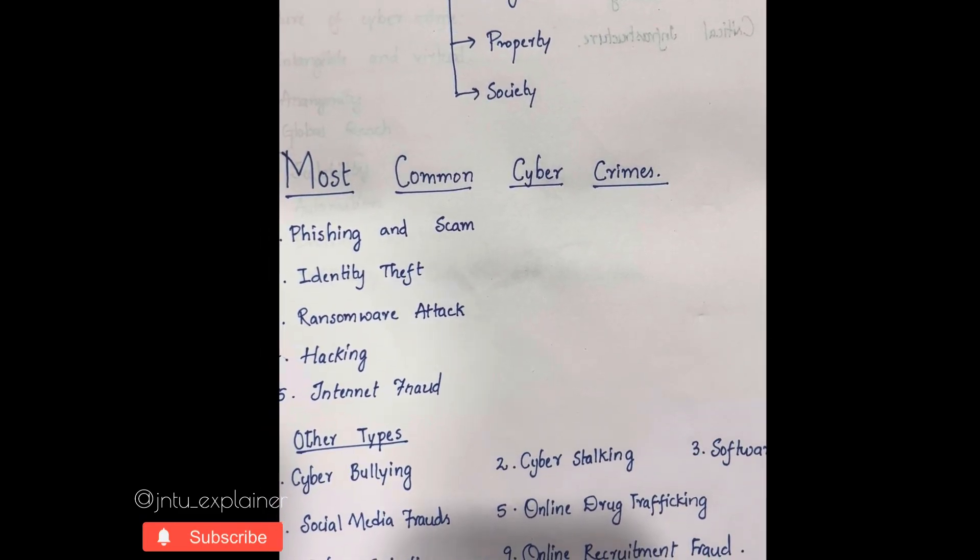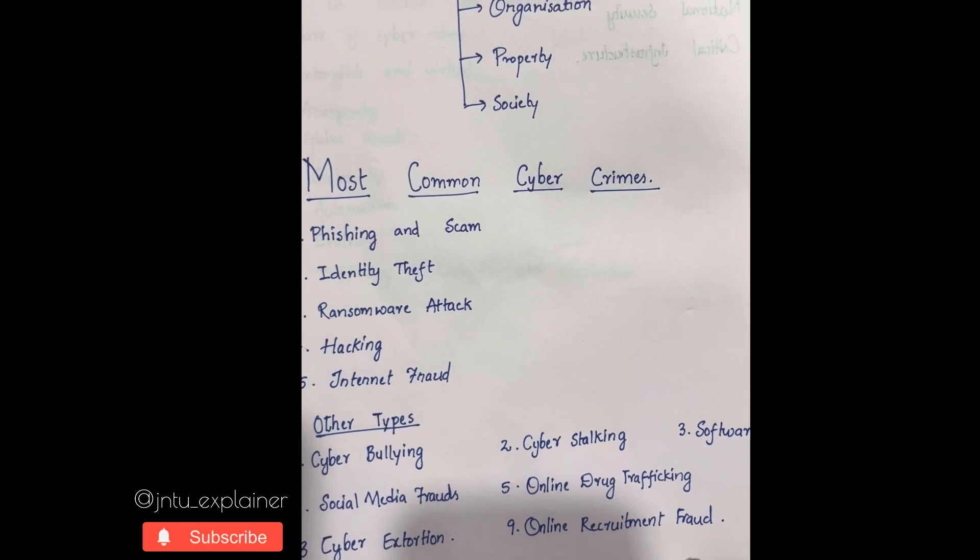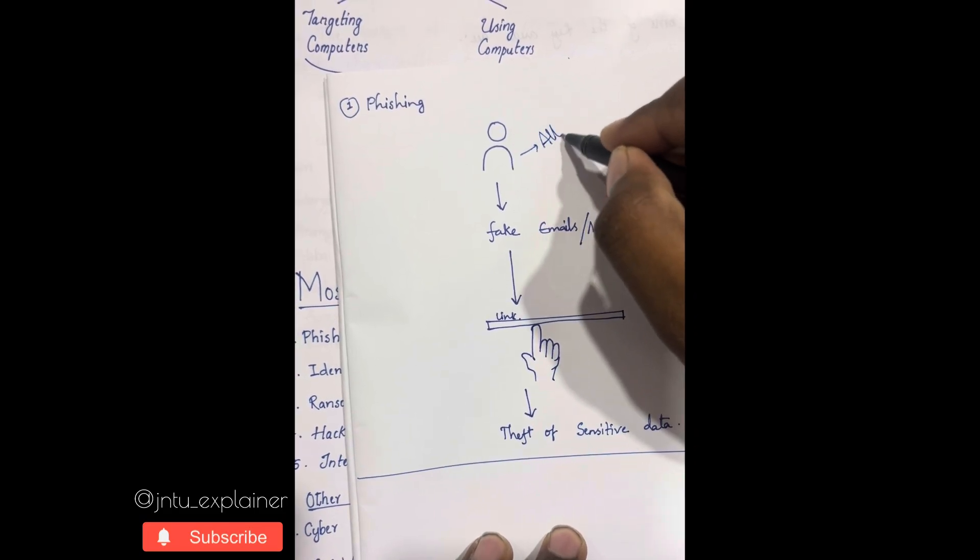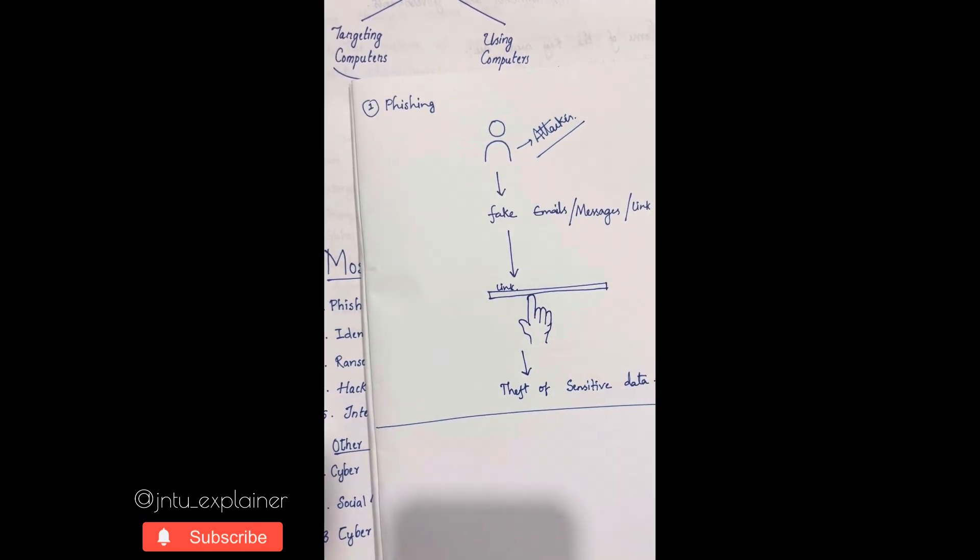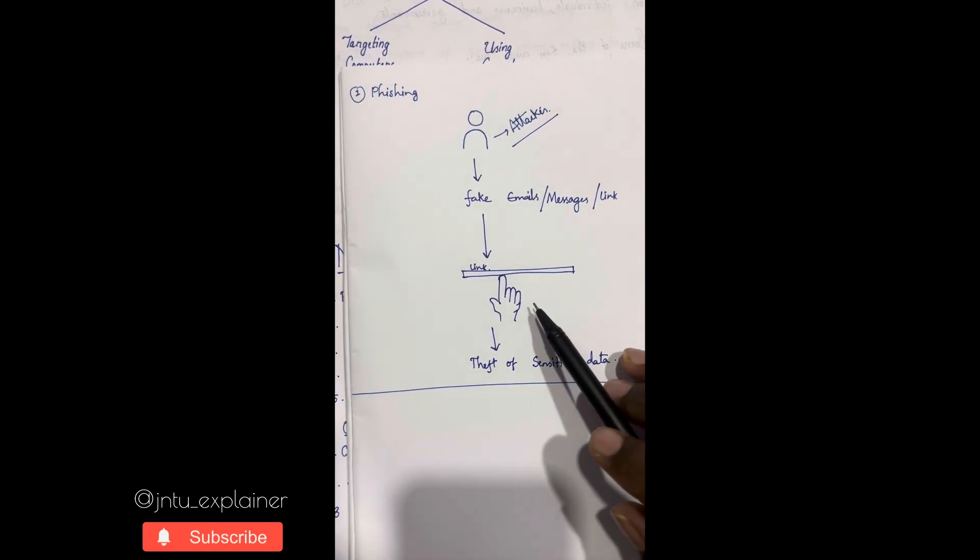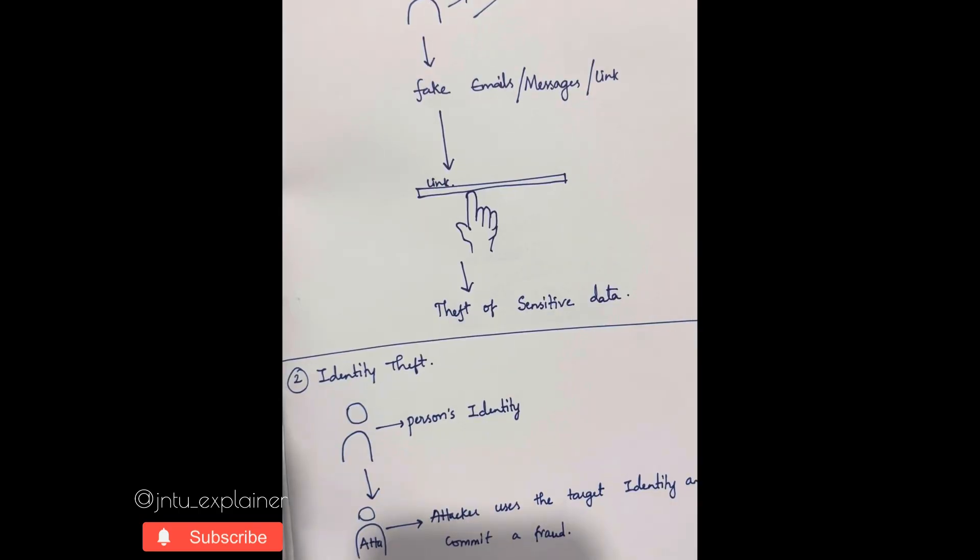Now let's look into some of the common cyber crimes. The first one is phishing and scam. Usually, I will explain through an example: attackers send fake emails, messages, and links to their targeted persons. When the person clicks the link unknowingly or knowingly, they directly attack the sensitive data of that person. This is a type of attack which is used many times in cyber crime.